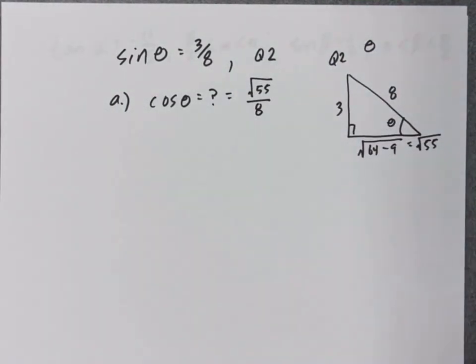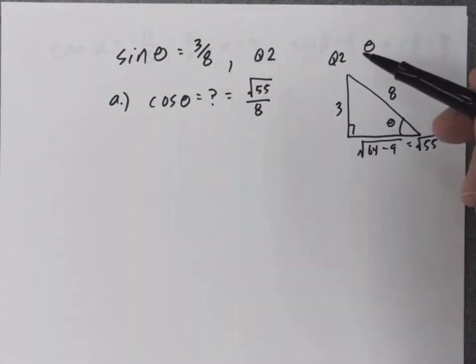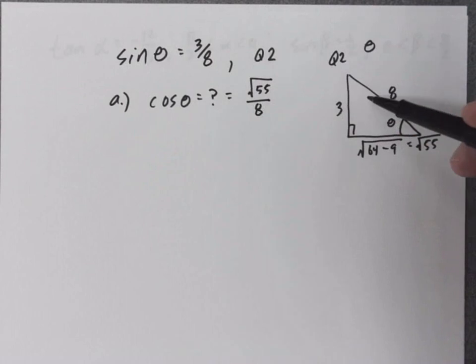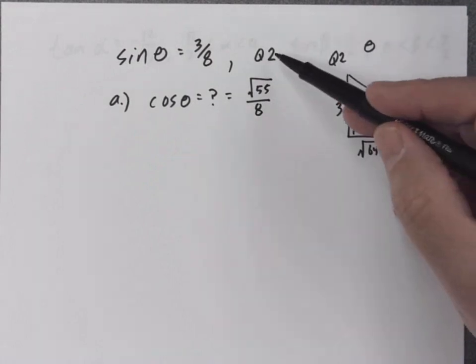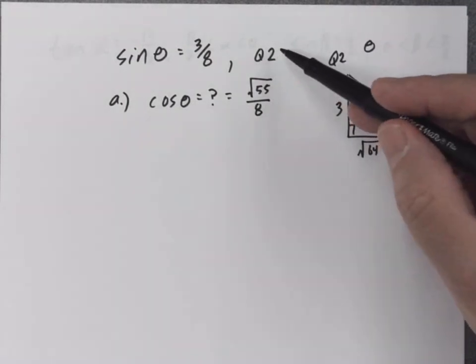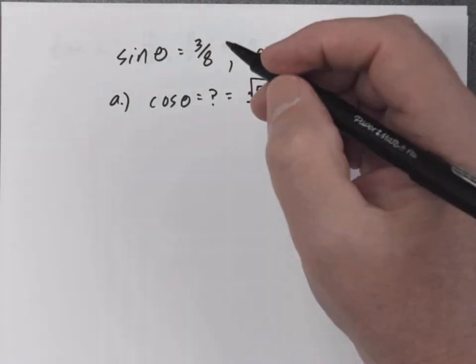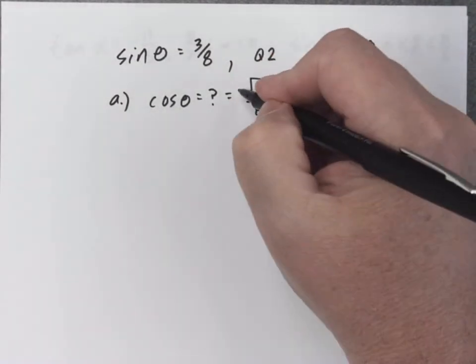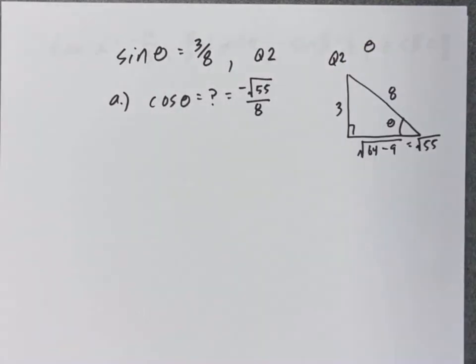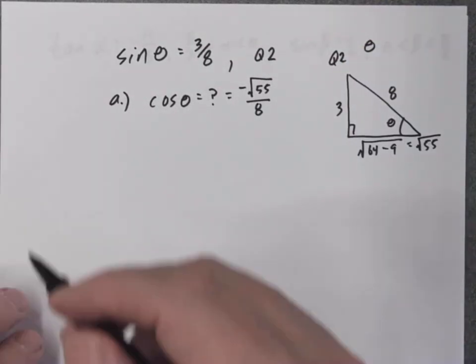But don't forget this angle theta is in quadrant two. Cosine in quadrant two is always negative. So the answer for part A is negative square root of 55 over 8.